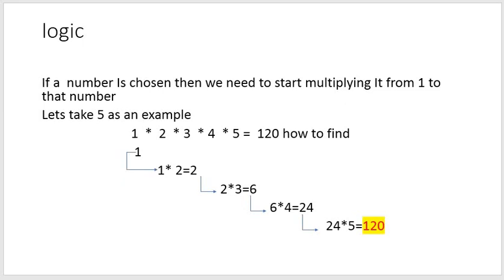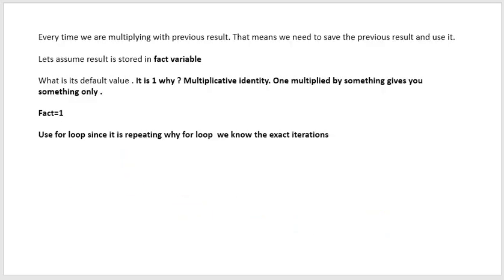In this step, what we understood is that every time we are repeating the same logic — taking one number and multiplying with another, where that other number is incrementing by 1. As it is repeating the same statement, we can make it a loop. The loop we use here is the for loop. Why only for loop and not while or do-while? Because we use a for loop when we know the exact number of iterations. Here, if the number is 5, we know it iterates 5 times; if 10, then 10 times.